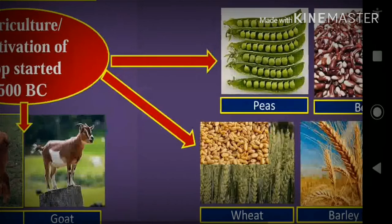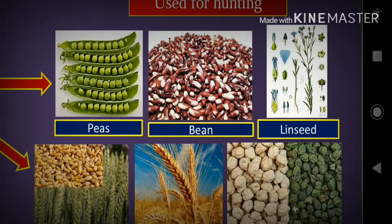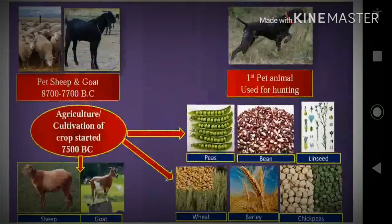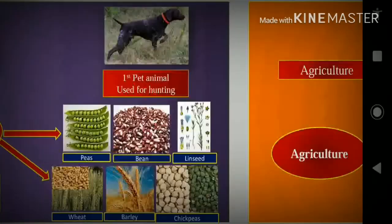Here you can see the pictures. Sheep and goat they also reared. These are the crops which they have grown in 7500 BC: peas, bean, linseed, wheat, barley, and chickpeas.